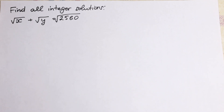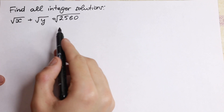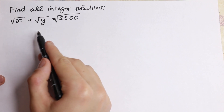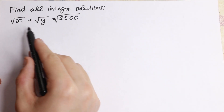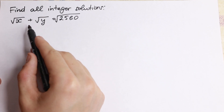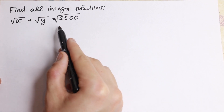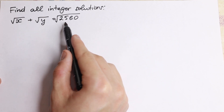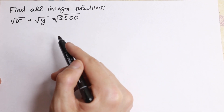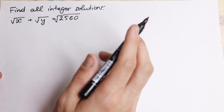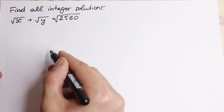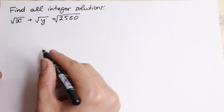Hello everyone, welcome back to higher mathematics. Today we have a really interesting algebra problem. We need to find all integer solutions of this equation with two variables x and y. We have the square root of x plus the square root of y equal to the square root of 2560. I want to show you my approach — a really good approach for how to easily solve this interesting question.